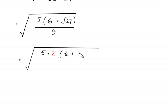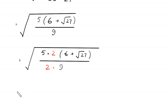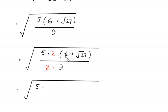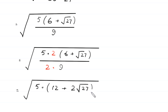We have 5 times (6 plus square root of 27) divided by 9. Multiplying the numerator by 2 gives us 2 times 6 equals 12, plus 2 times square root of 27 in the numerator, and 2 times 9 equals 18 in the denominator.